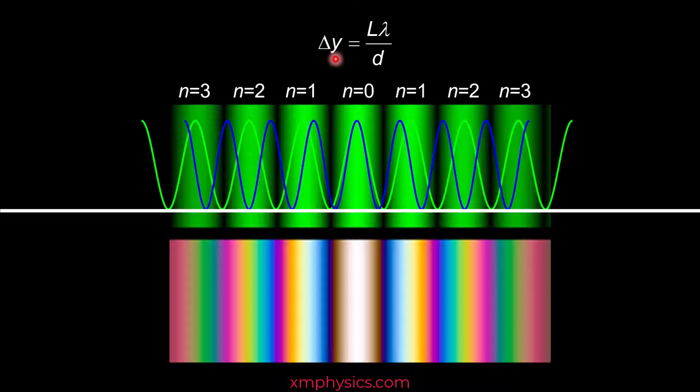Remember, the fringe separation is given by L lambda over D. So blue light has a shorter wavelength, right? So with a shorter wavelength, the fringe separation is also smaller. That's why the bright fringes are more closely packed.